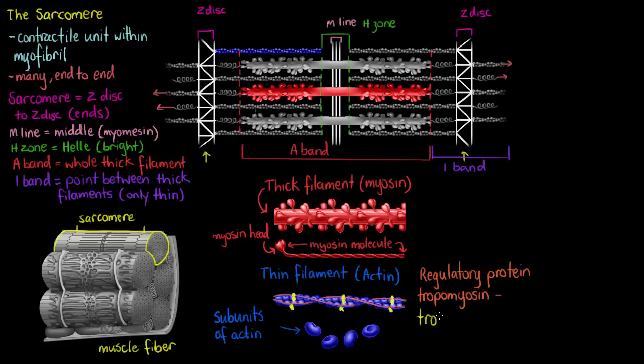And the second regulatory protein that we have going along with our actin is troponin. And your troponin is going to be bound to the tropomyosin and is the three protein unit that is involved directly with allowing contraction to happen. So our actin thin filament also had troponin and tropomyosin accompanying it.